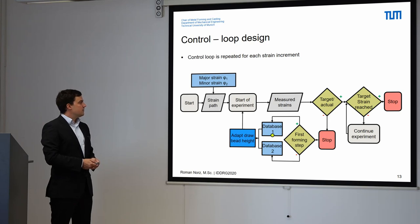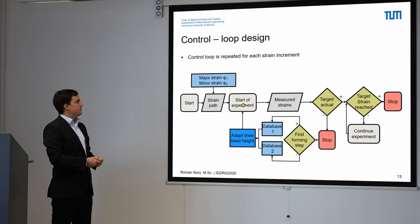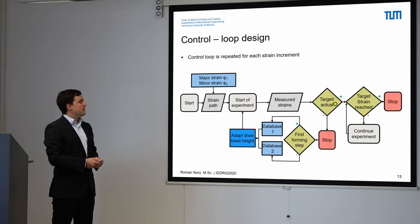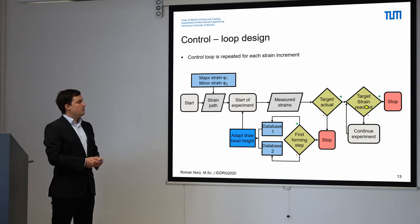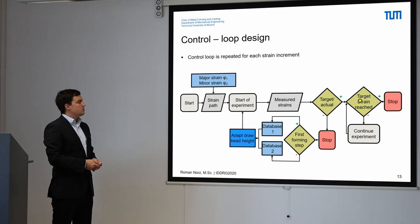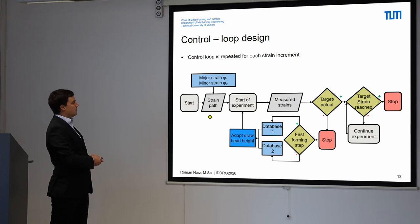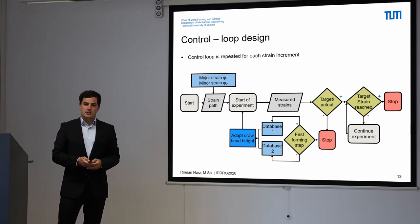We go to the database we have created prior and adapt the draw bead height according to the database. When the draw bead height is set to the new value, we start the experiment again and check if the target and actual strains are in good agreement. If this is the case, we check if we have reached the target strain given in our strain path. If the target strain is not reached, we continue the experiment until we have reached the target strain. When the target strain is reached, we stop the experiment and begin again from the beginning. We enter our new strain path increment, and so we are able to create arbitrary non-proportional load paths which follow a given strain path.